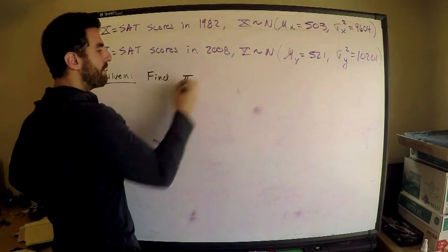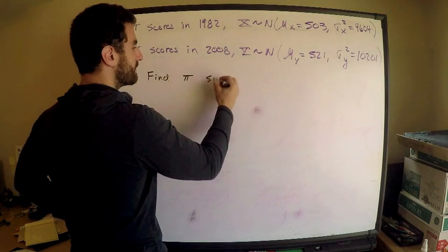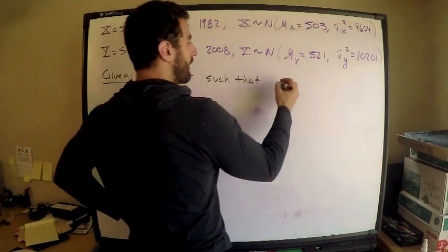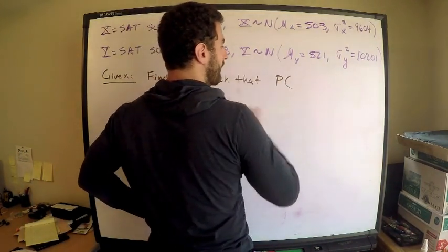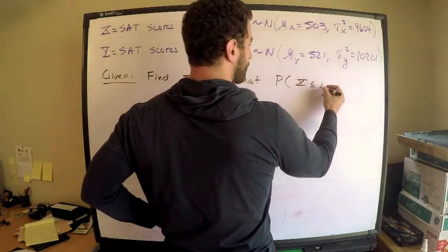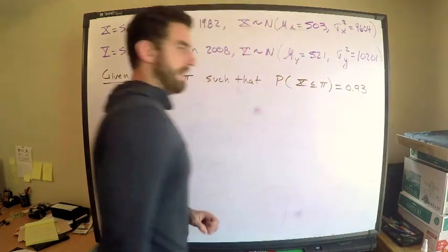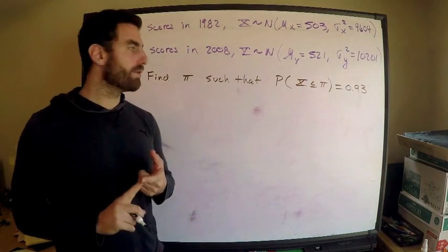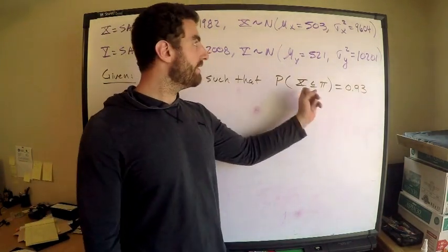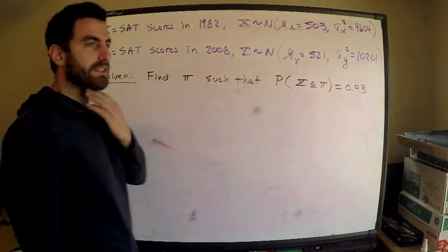So we need to find—I like using notation pi for percentile—we need to find pi such that, the mother's score in 1982, I want to know what is going to be the probability that X is less than or equal to pi is equal to 0.93. In other words, what I'm doing here is I'm finding the score P that corresponds to the 93rd percentile in the year 1982. Not that bad, just use the definition.